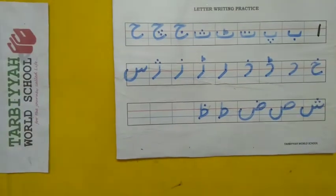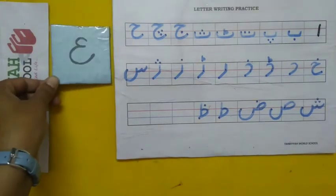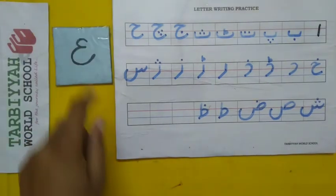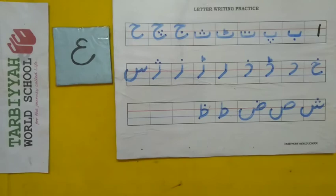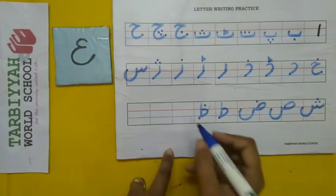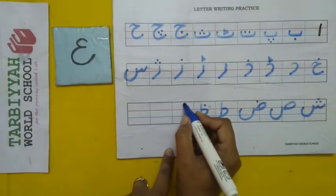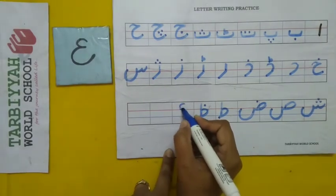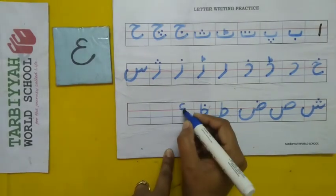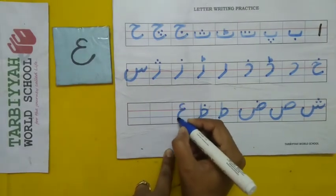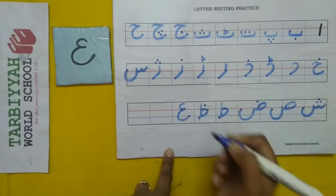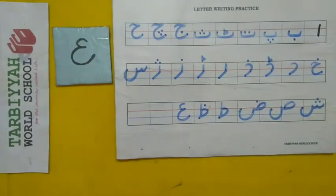Tell us — what comes after Zoy? Yes, the next letter is Ayin. So how do we write Ayin? One curve and one more curve — like this. Ayin.